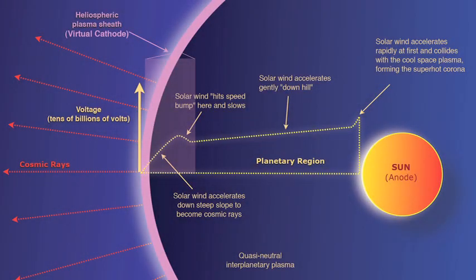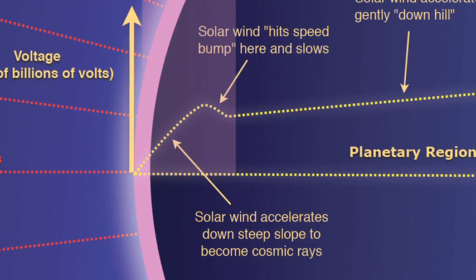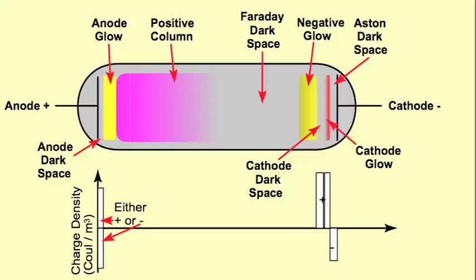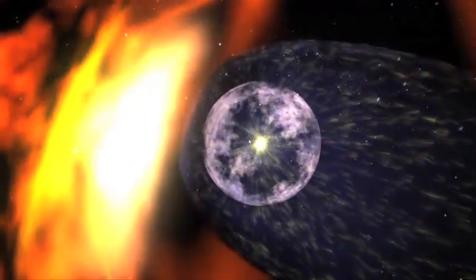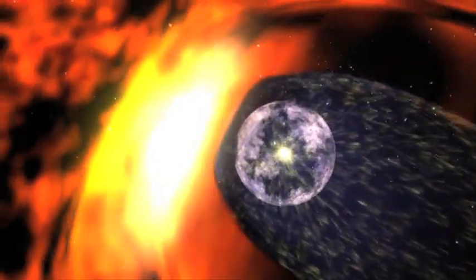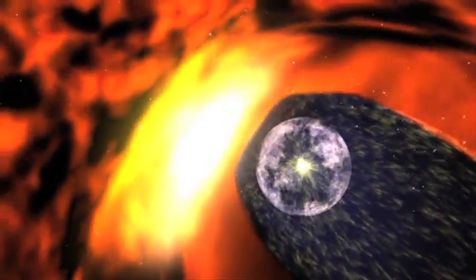The Electric Universe model predicts a reversal of the Sun's electric field as a space probe approaches the heliospheric boundary. This boundary acts as a virtual cathode in relationship to the Sun as the anode in an electrical exchange. The charged particles from the Sun will not be deflected laterally as the standard model predicted, but the solar wind will simply cease.